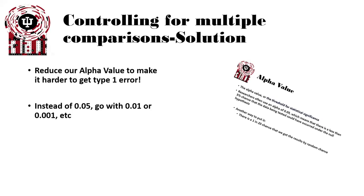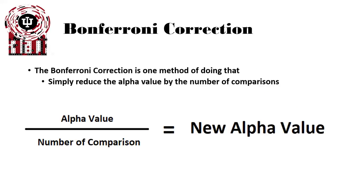How do we control for that? We reduce our alpha value or cutoff value based upon the number of comparisons. If we reduce the alpha value, it makes it harder and harder to have type 1 errors. So instead of using 0.05, maybe we go to 0.01 or 0.001, et cetera. One of the most commonly used corrections — and also the strictest — is the Bonferroni correction.